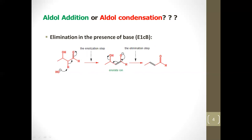In the next step, the oxygen electrons move, a double bond forms, and the hydroxyl group is eliminated. We get a double bond at the alpha-beta position. This compound is called an alpha-beta unsaturated carbonyl compound, where the carbonyl is the functional group carbon, the next carbon is alpha, and the next is beta.